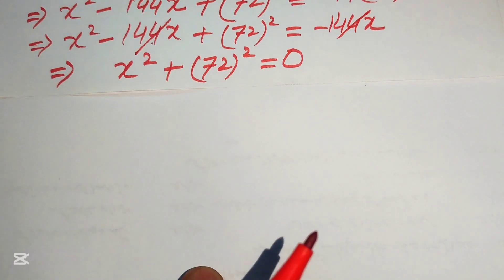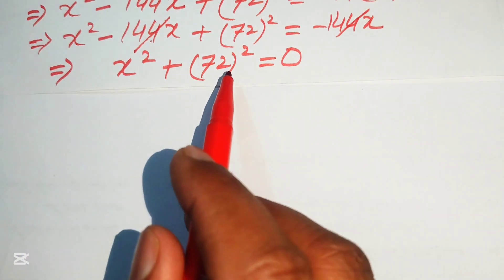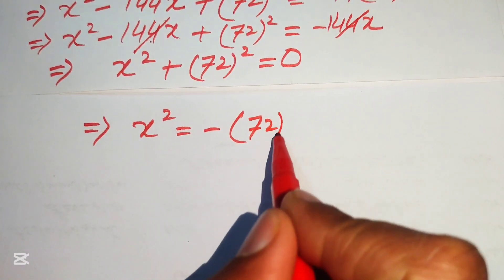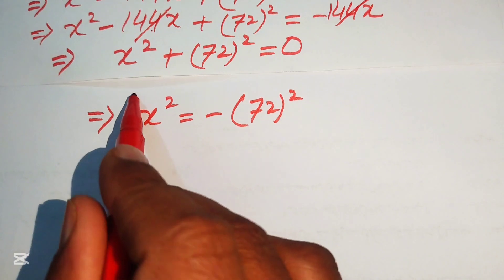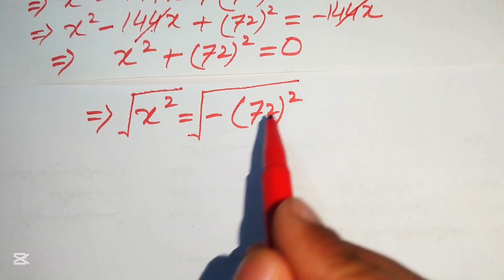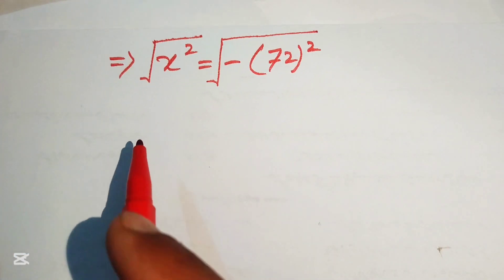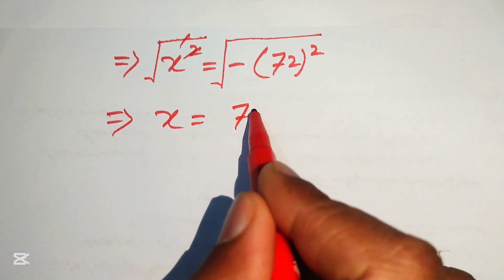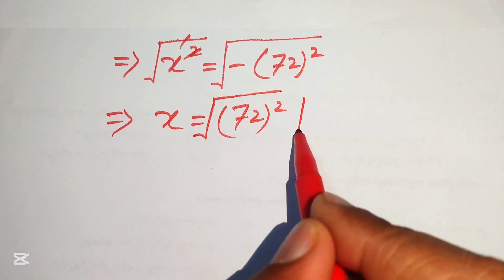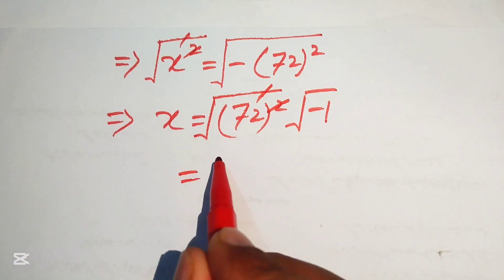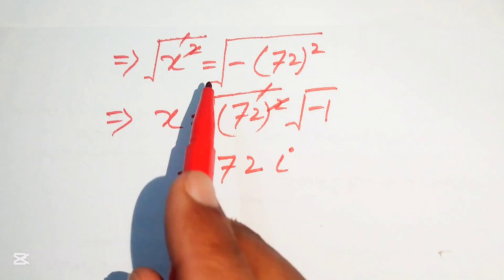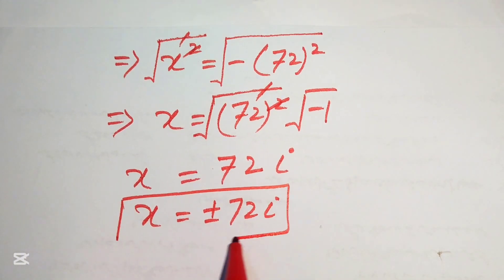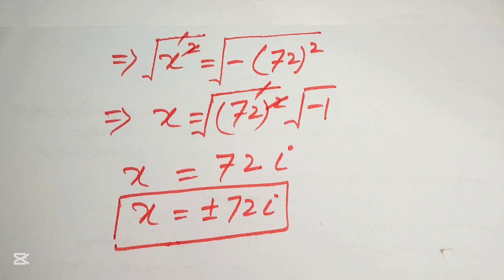Moving 72 squared to the right hand side gives x squared equals minus 72 squared. Taking the square root on both sides, the squares cancel and we get x equals plus or minus 72 times square root of minus 1, which equals plus or minus 72i. This is our final answer. Thank you so much for watching this video — please subscribe to my channel for more exciting videos.